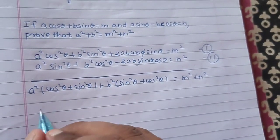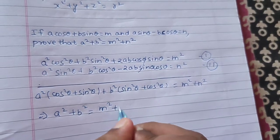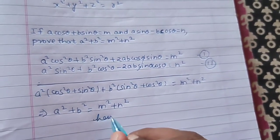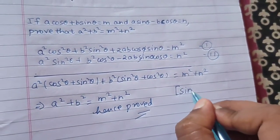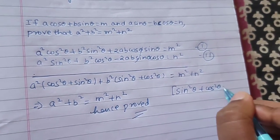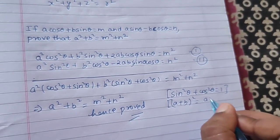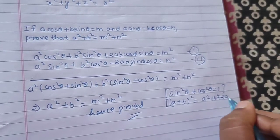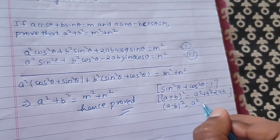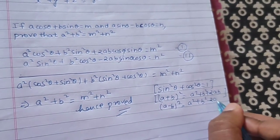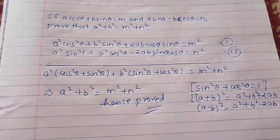Since sin²θ + cos²θ = 1, we can write a² + b² = m² + n². Hence we proved the result using the basic trigonometric identity sin²θ + cos²θ = 1, along with the algebraic identities (a + b)² = a² + b² + 2ab and (a - b)² = a² + b² - 2ab.